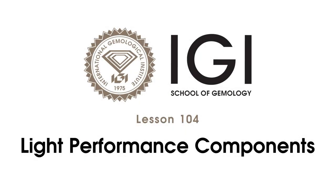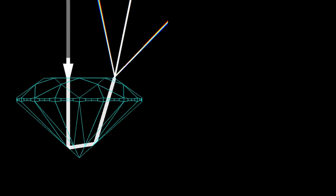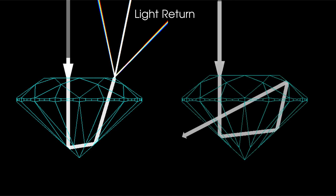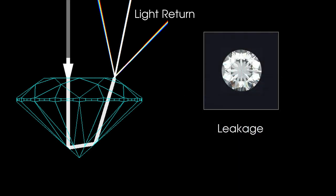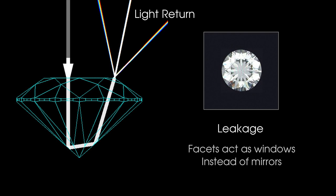Let's talk about light behavior and the components of diamond performance. Depending on how it was cut, light entering a diamond will either reflect and return to the viewer's eyes, or pass through the bottom of the stone as leakage or windowing. Leakage is generally a negative component, since the facets are acting as windows instead of mirrors, creating undesirable dark or neutral areas.